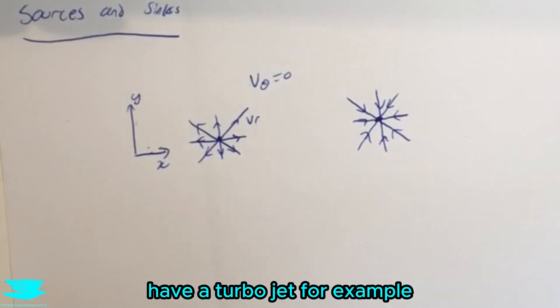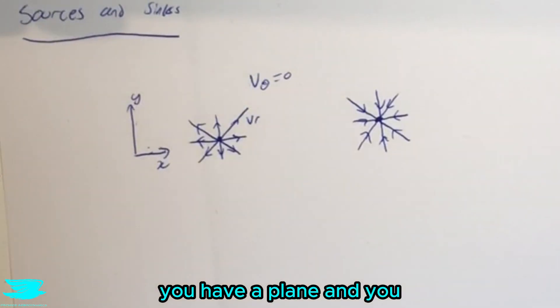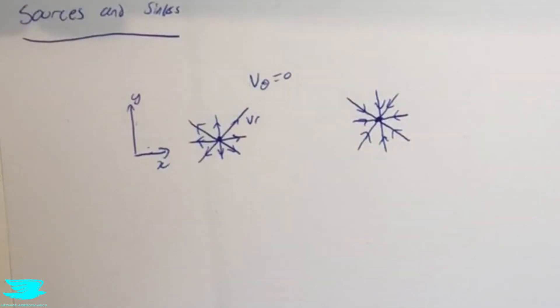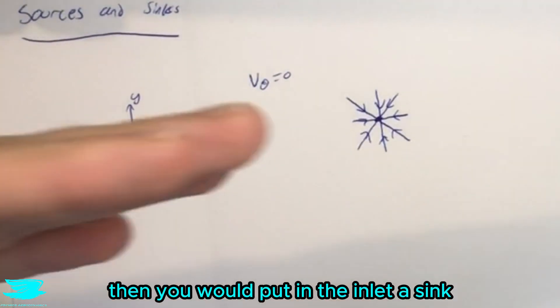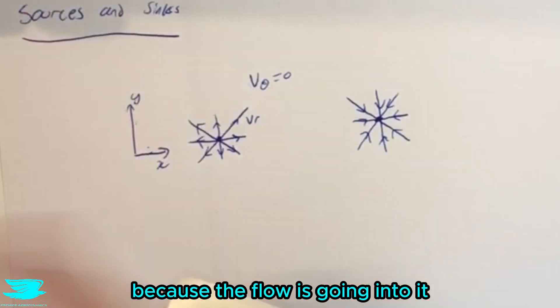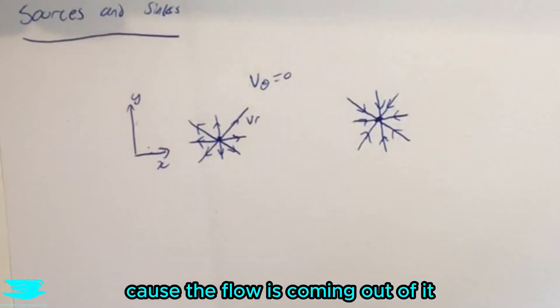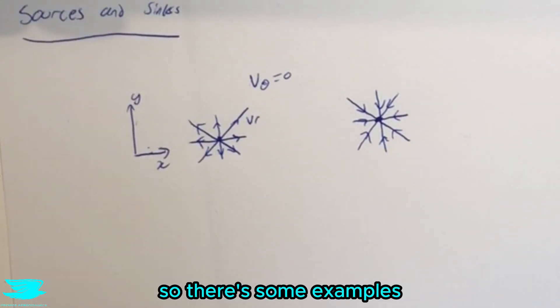Another example is if you have a turbojet for example, if you have a plane and you want to simulate the flow going through the turbojet or the turbofan, then you would put in the inlet a sink because the flow is going into it and then in the outlet you would put a source because the flow is coming out of it. So those are some examples as to when sources and sinks are beneficial.